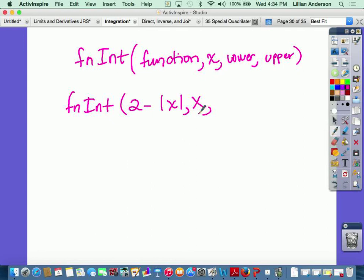The comma is located right above the 7 button. x, comma, again, the lower bound which was negative 2, comma, upper bound which is 2, close parentheses. And when you do that, you still will get the same answer of 4.